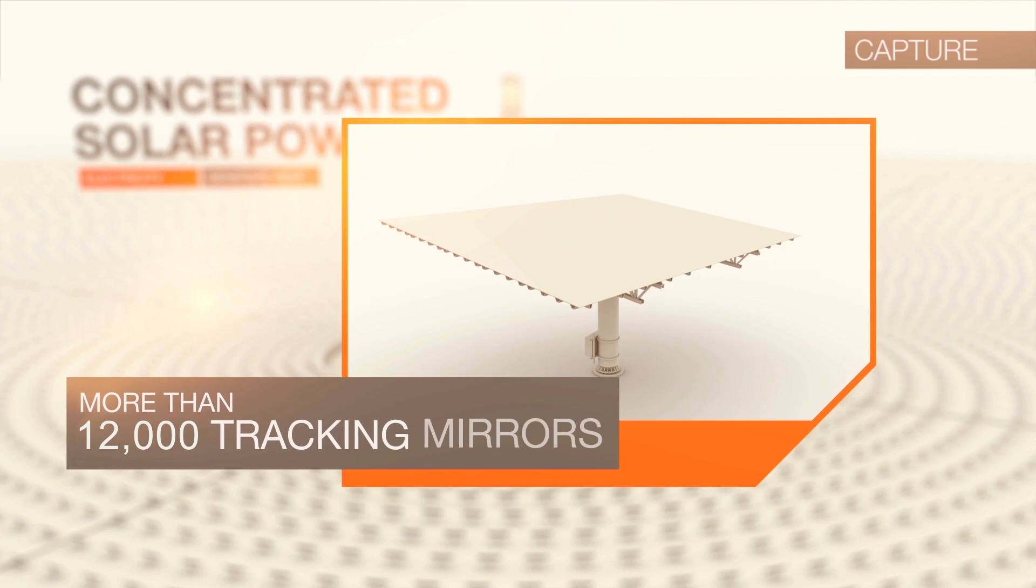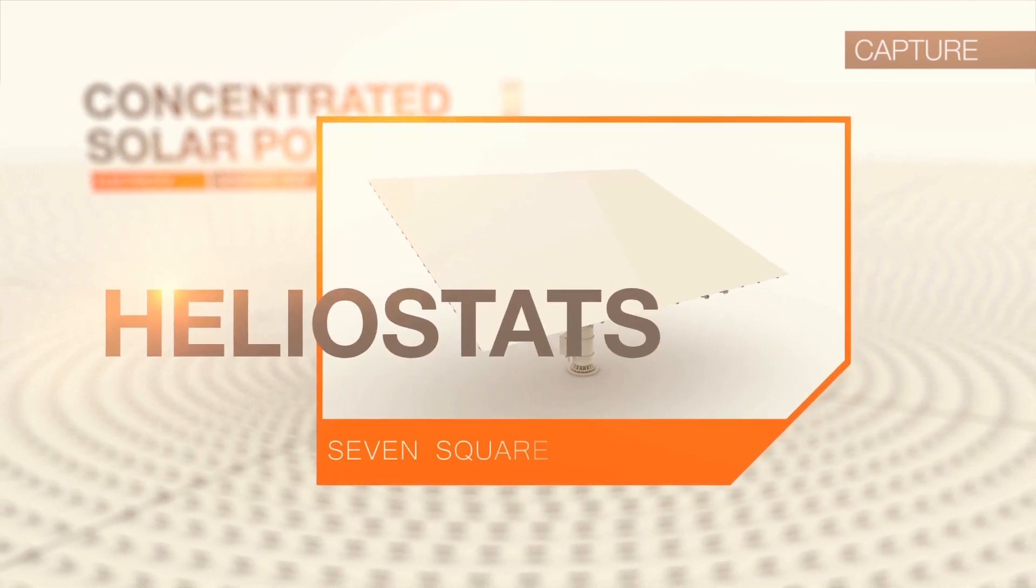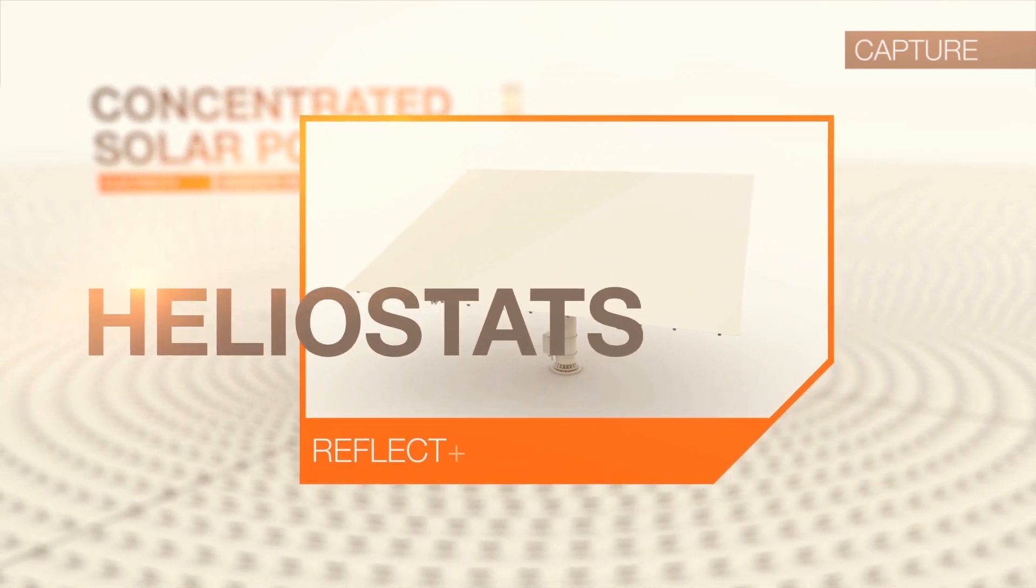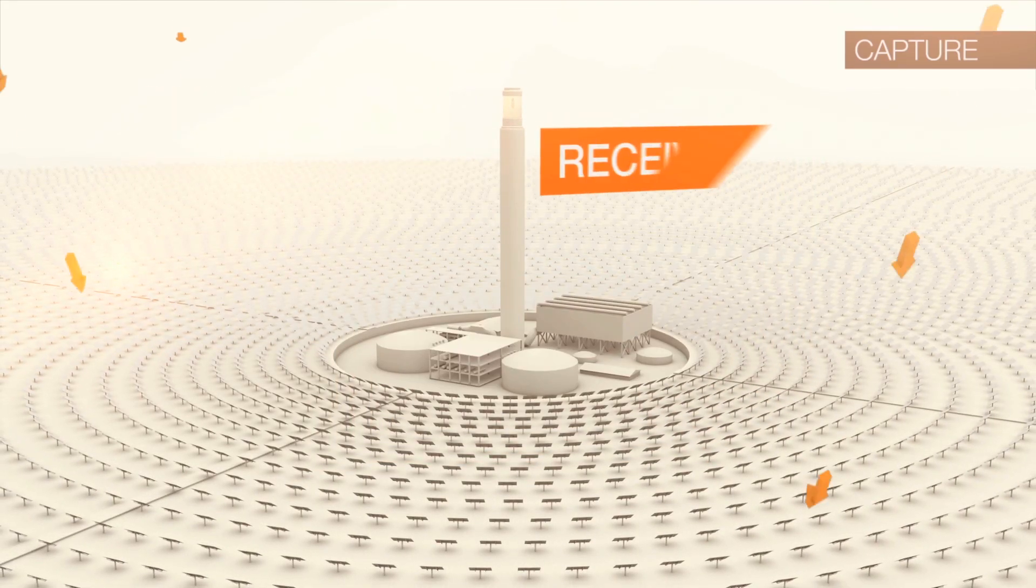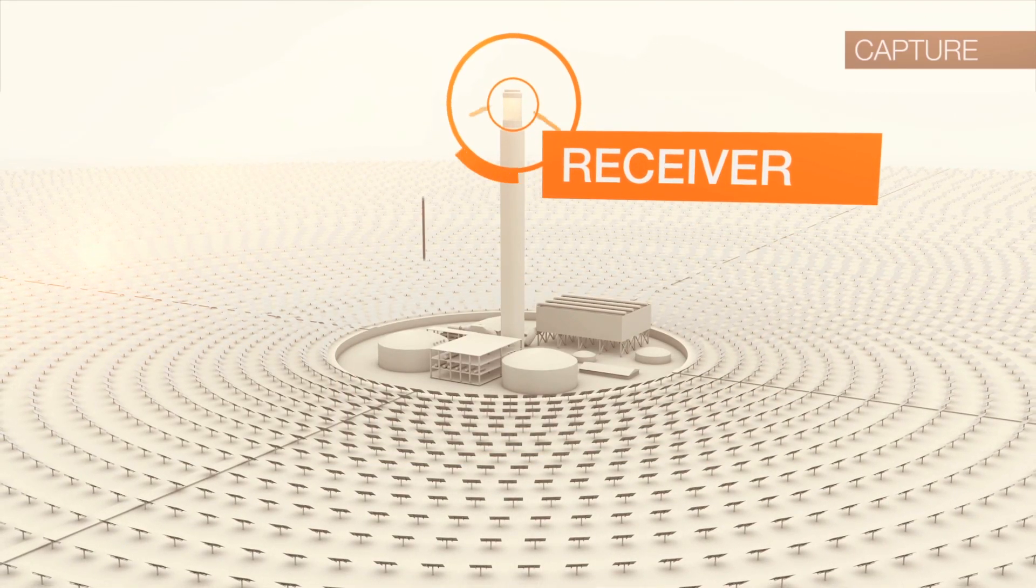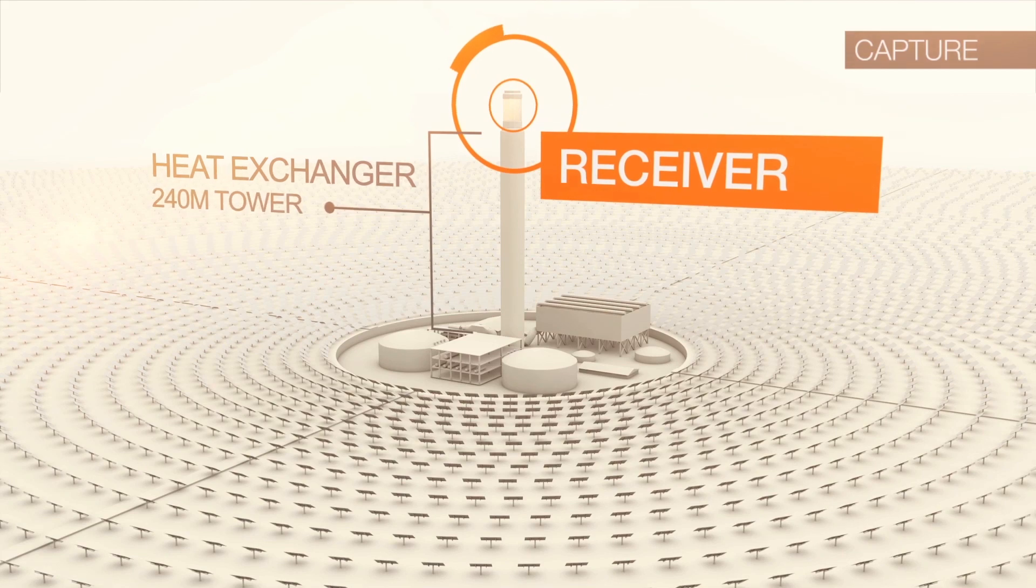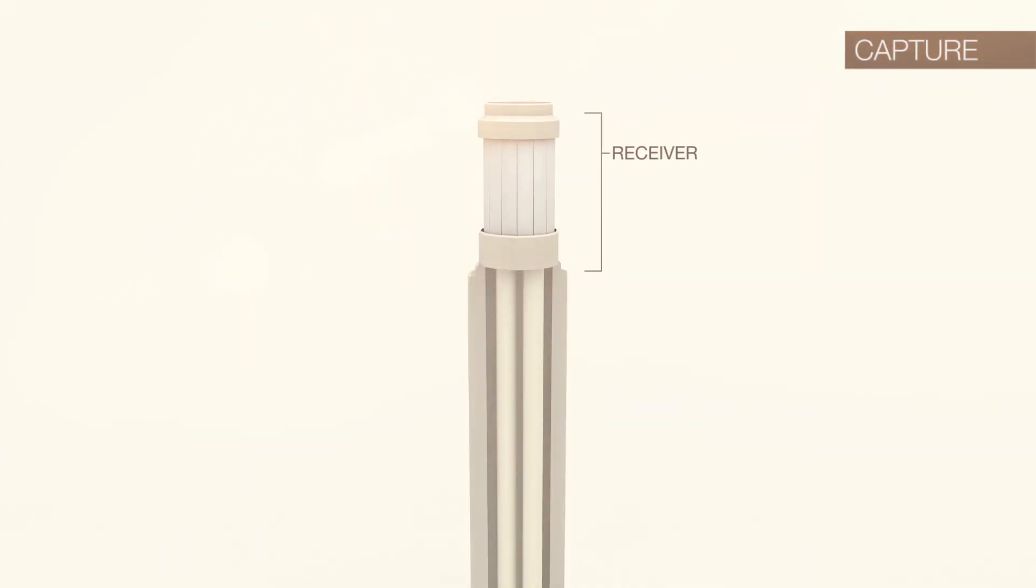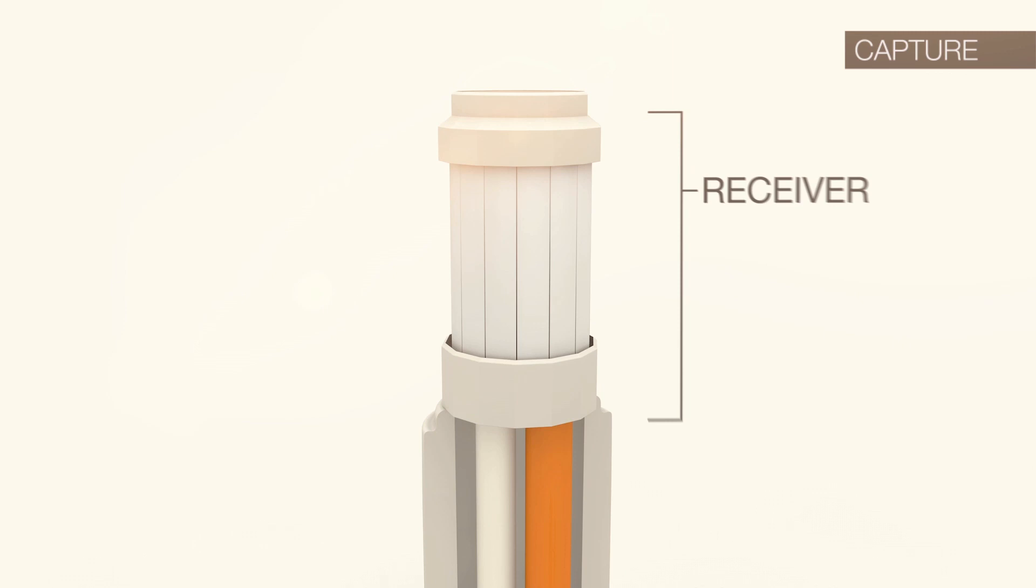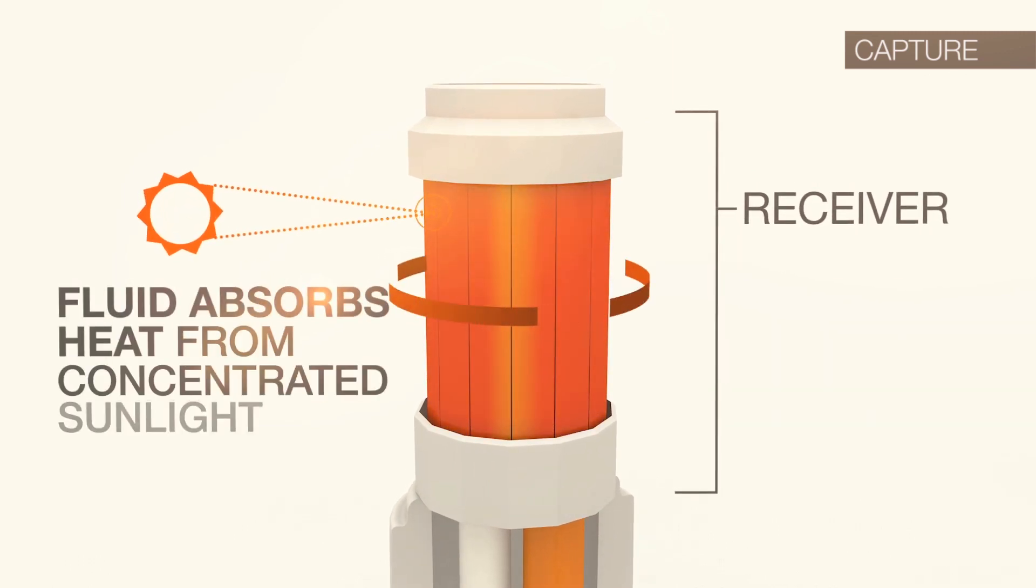More than 12,000 tracking mirrors, called heliostats, reside in a 7 square kilometer field where they reflect and concentrate sunlight onto a large heat exchanger called a receiver that sits atop a 240 meter tower. Within the receiver, fluid flows through the piping that forms the external walls. This fluid absorbs the heat from the concentrated sunlight.